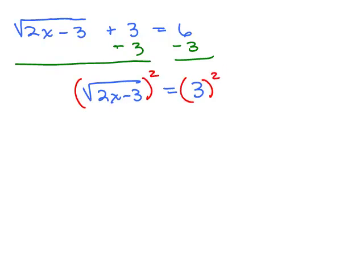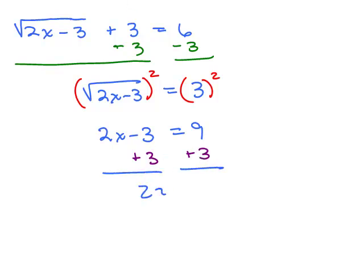Now we can square both sides. Remember, when you square a square root, you get what's underneath the radical. So we have 2x minus 3 equals 9. Now we have a linear equation — no x-squared term, no square root term. We solve for x by getting constants on one side and variables on the other. We add 3 to both sides, then divide by 2, and we get x equals 6.